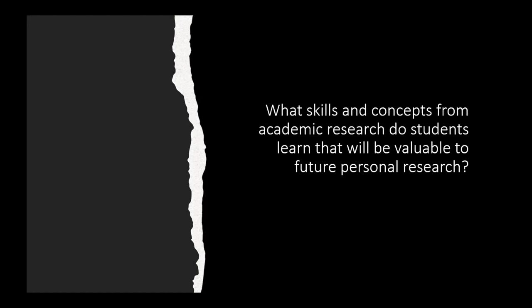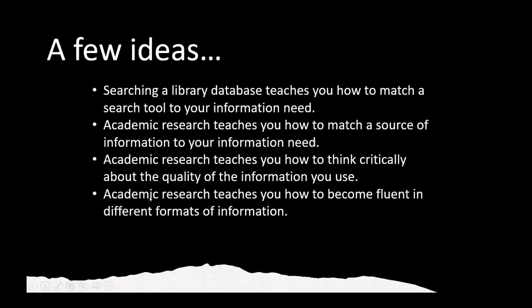There are a lot of skills and concepts that we teach students to use as part of their academic research that might come in handy when they start doing other research. Understanding the information cycle, using different keywords, these are all great ideas. When I have students do this activity, this is usually what I tell them, some ideas that I offer. Searching a library database teaches you how to match a search tool to your information need, which is a core skill associated with information literacy. Because it comes with certain conventions around what types of sources are considered appropriate and which are not, academic research also teaches you how to match a source of information to your information need. And while students may have learned how to make decisions about what sources to trust in their personal research, academic research teaches you to think more deeply and more critically about the quality of the information you use.